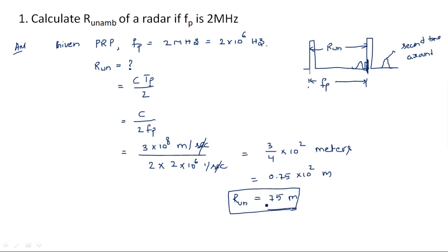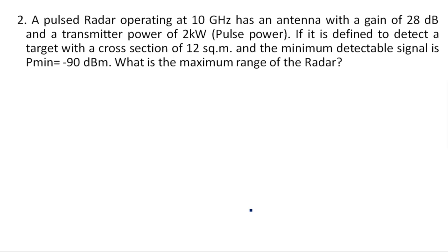This type of problem can appear in 2-mark or 3-mark questions. Generally, you will be asked to calculate the maximum radar range equation with all parameters such as transmitting power, effective area, sigma, and everything. Now I will explain that type of problem. This is the maximum radar range equation calculation with different parameters included — very, very important. Definitely such questions will come in the examination, in the B-part which is the calculation/problem part.